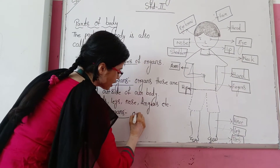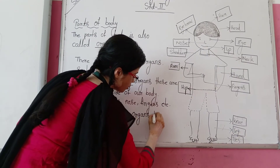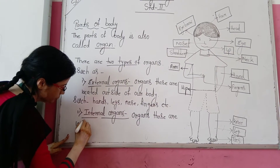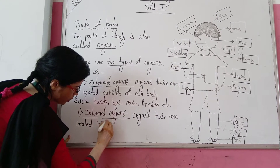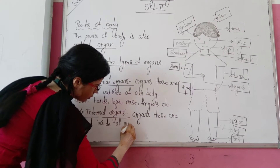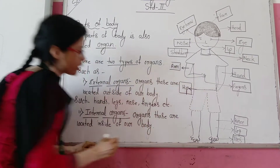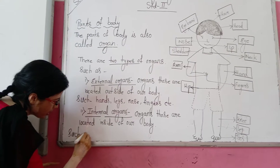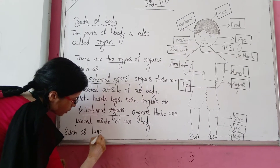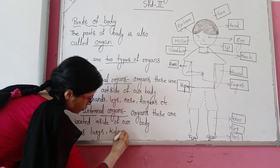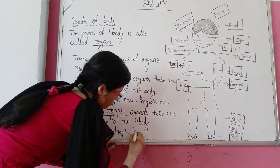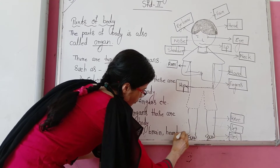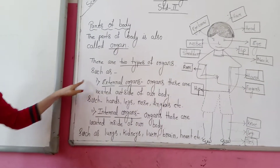The second type is internal organs. What are internal organs? Organs that are located inside of our body — we cannot see them. Examples of internal organs include lungs, kidneys, liver, brain, and heart. So there are two types of organs: external organs and internal organs.